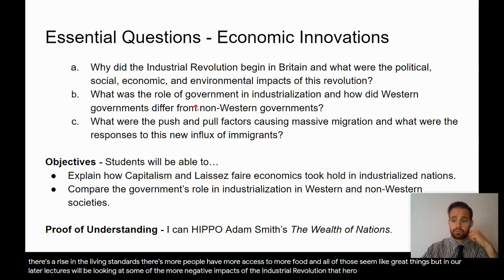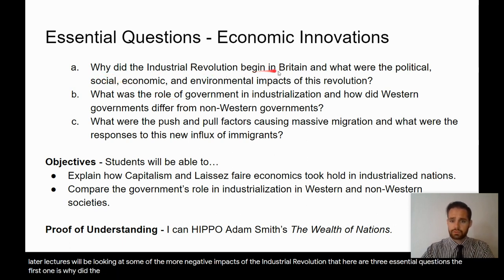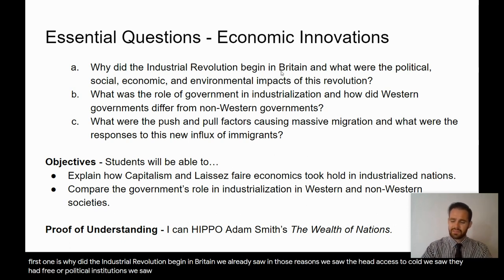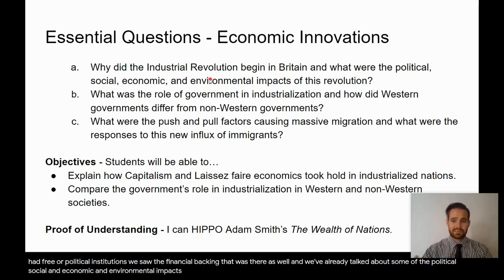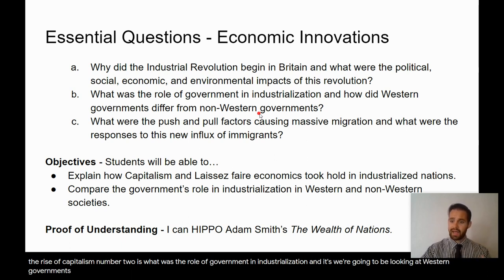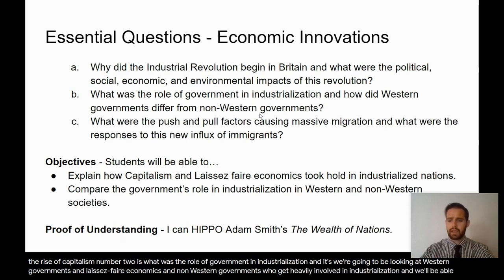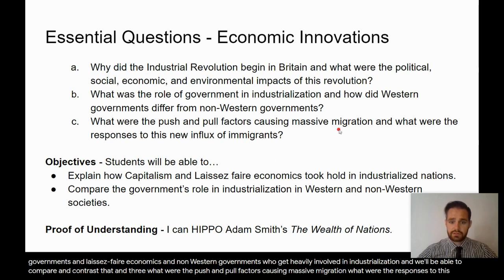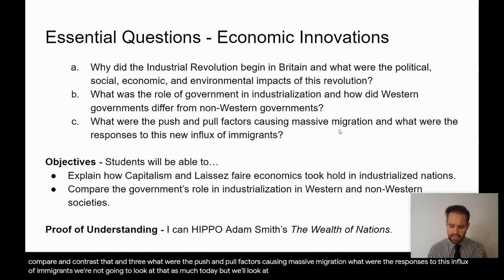Here are our three essential questions. First: why did the Industrial Revolution begin in Britain? We already saw those reasons — access to coal, freer political institutions, and financial backing. Second: what was the role of government in industrialization, and how did Western governments differ from non-Western governments? We'll look at Western laissez-faire economics and non-Western governments that get heavily involved. Third: what were the push and pull factors causing massive migration and what were the responses to immigrants? We won't cover that as much today.